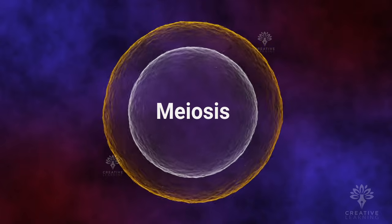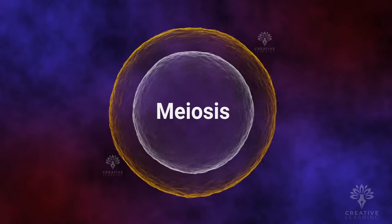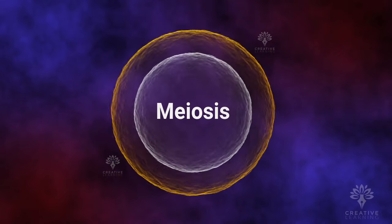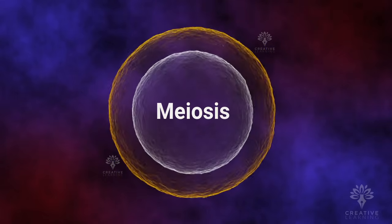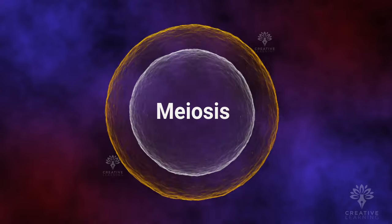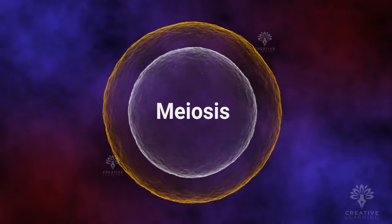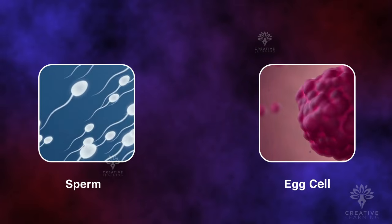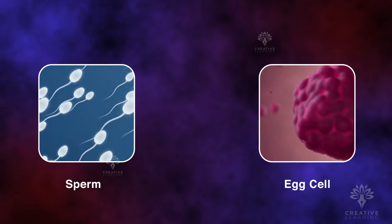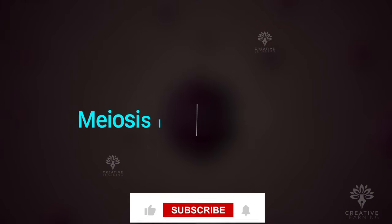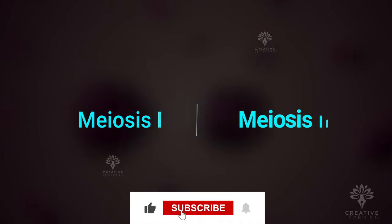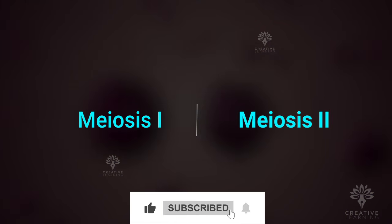The process of cell division that results in gametes is known as meiosis, sometimes known as reduction division. We refer to gametes as sex cells, such as sperm in men and egg in women. Meiosis is divided into the meiosis I stage and the meiosis II stage of cell division.